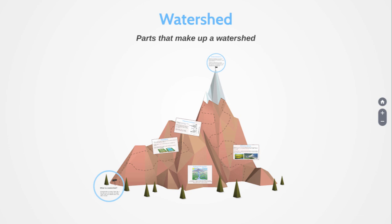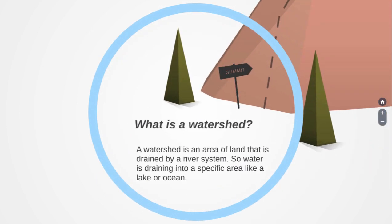Alright guys, so today we're going to look at a watershed — what a watershed is, and what makes up a watershed. So what is a watershed? A watershed is an area of land that is drained by a river system. Water is draining into a specific area like a lake or an ocean. Think of any large area of land, and the water found on that land needs to go somewhere — and that is your watershed.